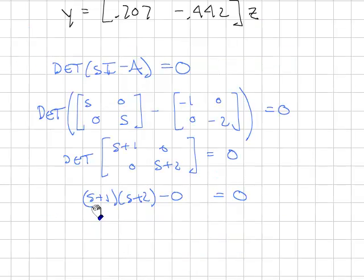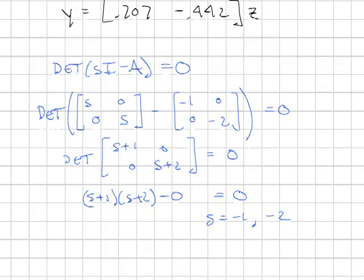And now we need to take the determinant of this. And we're left with this equation, S plus 1 times S plus 2 is equal to 0, which means that the roots are S is equal to minus 1, S is equal to minus 2. That's the poles of the system. It's the eigenvalues of the A matrix.